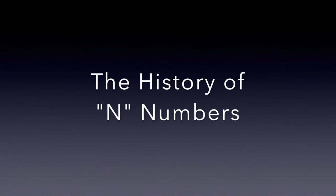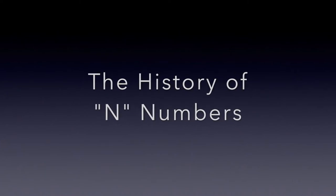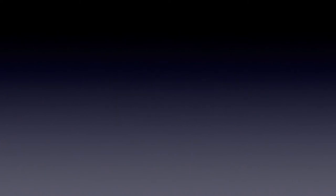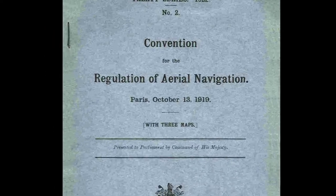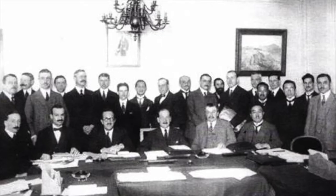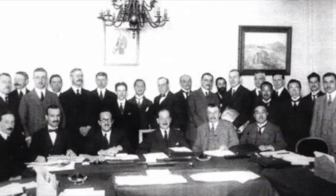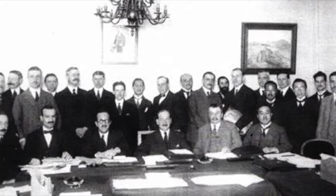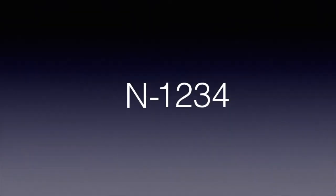The United States received the letter N as its nationality designator under the International Air Navigation Convention, which was held in 1919. The convention prescribed an aircraft marking scheme of a single letter indicating nationality, followed by a hyphen and four identity letters. The five letters together were to be the aircraft's radio call sign.